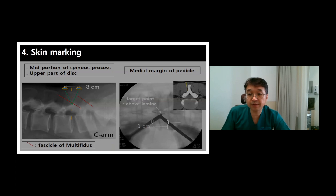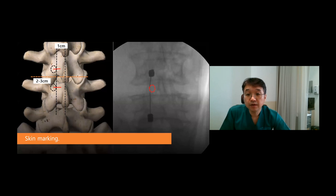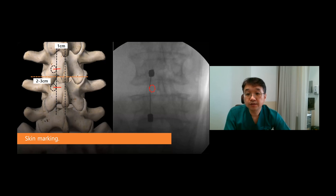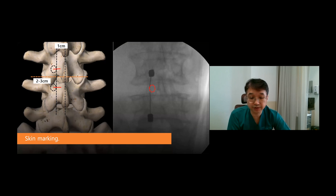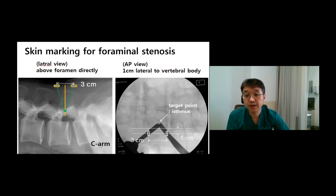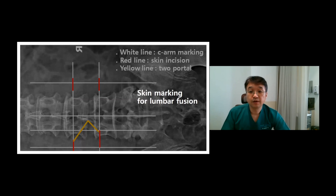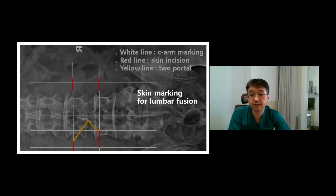Next is skin marking. For the interlaminar approach, the target is the upper part of the disc and the medial margin of the upper pedicle. Find the disc level with C-arm and from the midline, go laterally 1 cm. The target is the superior spinolaminar junction. The distance between two portals is about 2 to 3 cm. Sometimes we use a spinal needle to reduce use of the C-arm. For the paraspinal approach, in the lateral view, the target is just above the pedicle. In the AP view, the isthmus is the target. Two portals are made on the 1 cm lateral side from the vertebral lateral margin. For spine fusion, the reference point is the pedicle. This picture shows four incisions to compress and insert the cage and screw for fusion.